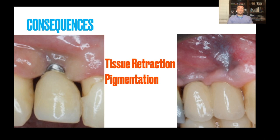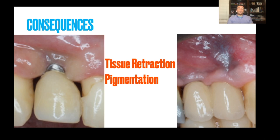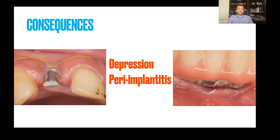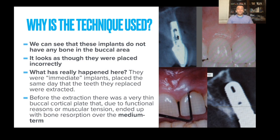Complications include tissue retraction, titanium shine-through the tissue, buccal collapse or depression, and eventual peri-implantitis. These implants do not have any bone present in the buccal area — it may look like they were placed incorrectly, but these were immediate implants placed the same day the teeth were replaced. The buccal plate was very thin, and over time from function and muscular tension, bone resorption occurred, leaving a very thin or non-existent buccal plate.